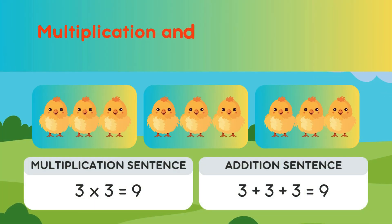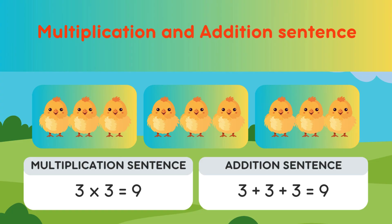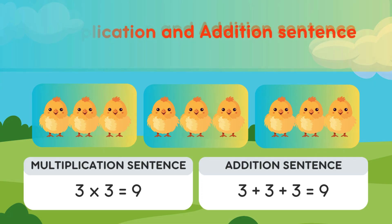What about this one? The Multiplication Sentence is 3 times 3 equals 9, because there are 3 groups and 3 chicks inside each group. And the Addition Sentence is 3 plus 3 plus 3 equals 9! Yay!